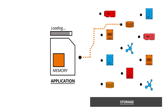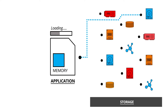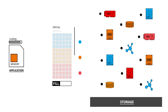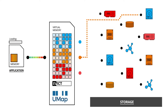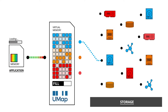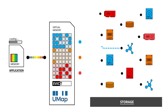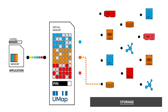Unlike a standard system operation, which requires multiple steps to copy data from a data store into main memory, UMAP creates a virtual memory space that provides direct access to all the data stores that a user needs to access, regardless of where the data physically resides.